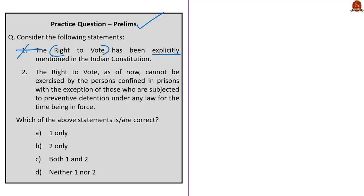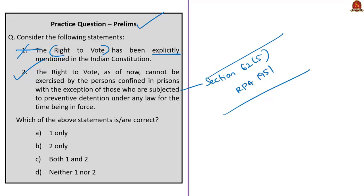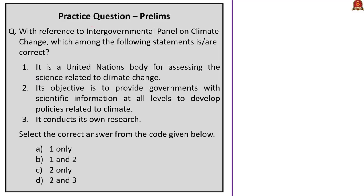The second statement: the right to vote cannot be exercised by persons confined in prisons, with the exception of those subjected to preventive detention under any law in force. This is correct per Section 62(5) of the Representation of the People Act 1951, which says no person shall vote at any election if confined in a prison, but this does not apply to persons under preventive detention. Only the second statement is correct — answer is option B: two only.